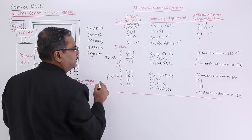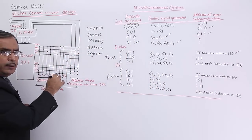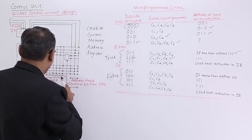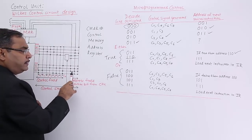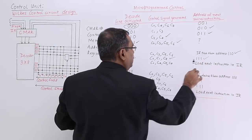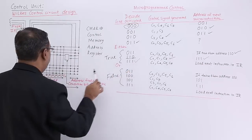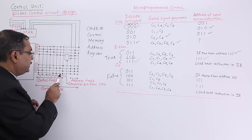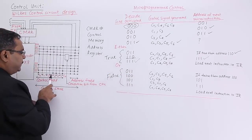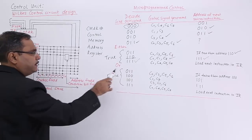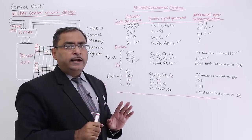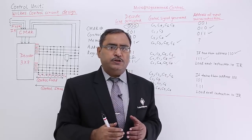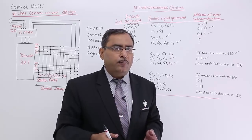For address 1 1 0, the respective control signals will get generated and the return address is 1 1 1. When the next instruction comes from 1 1 1, the control signals C0, C4, C5, and C7 will get generated. This indicates it is the end of the micro program — please take the next instruction from the Instruction Register for the next micro program.